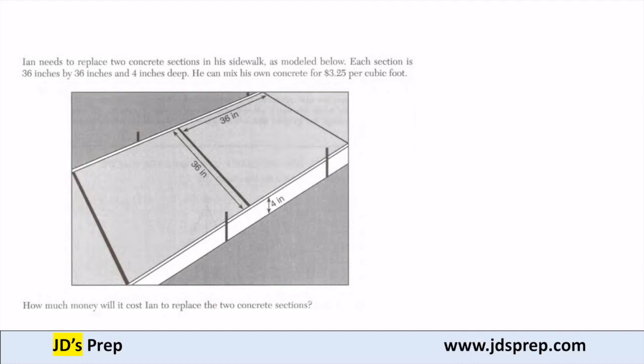So the first thing, let's convert those sides and the depth to feet. If I have 36 inches, divide that by 12, that equals 3 feet.